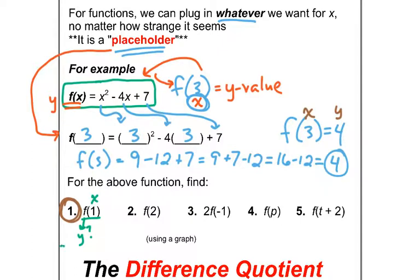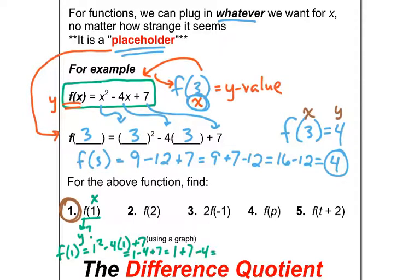f of 1: x is 1, so that's 1 squared minus 4 times 1 plus 7. That gives us 1 squared is 1, minus 4 plus 7. Putting the additions together: 1 plus 7 minus 4 equals 4. So f of 1 is 4. It's a cool coincidence that f of 3 was 4 and f of 1 is also 4 — just a coincidence.